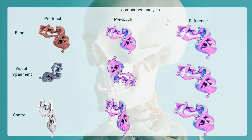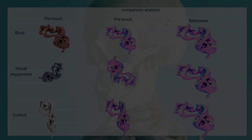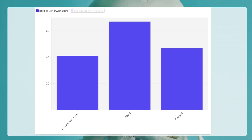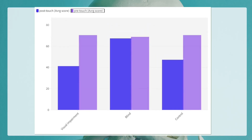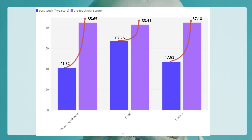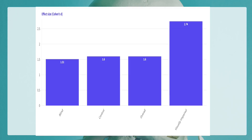Turning to the results, we witness a remarkable advancement in the mental representation of anatomical structures. For individuals with visual impairments, average scores soar from 41.32 pre-touch to an astounding 85.65 post-touch. The blind group also sees significant gains, with scores rising from 67.28 to 83.41. And the control group scores leap from 47.81 to 87.10.